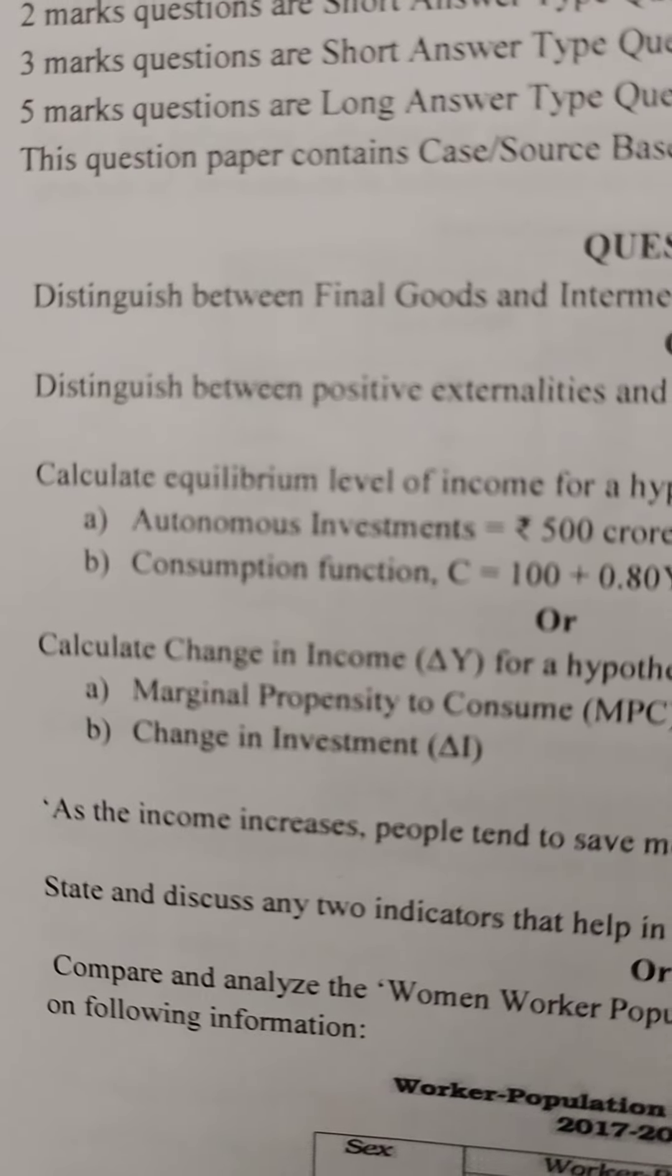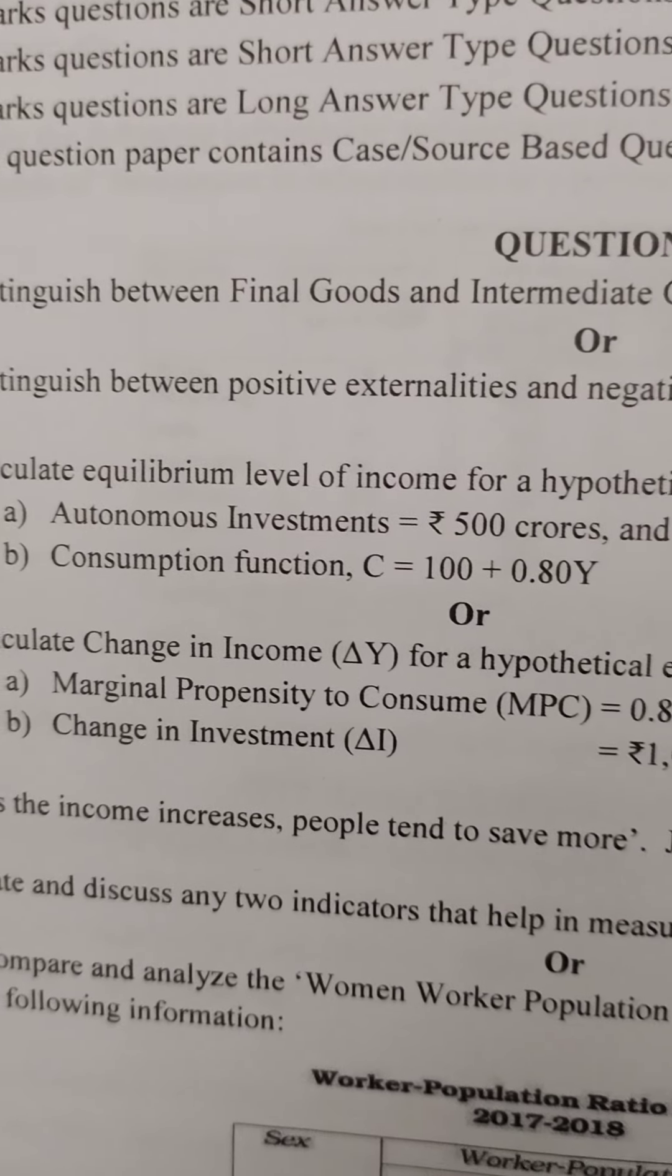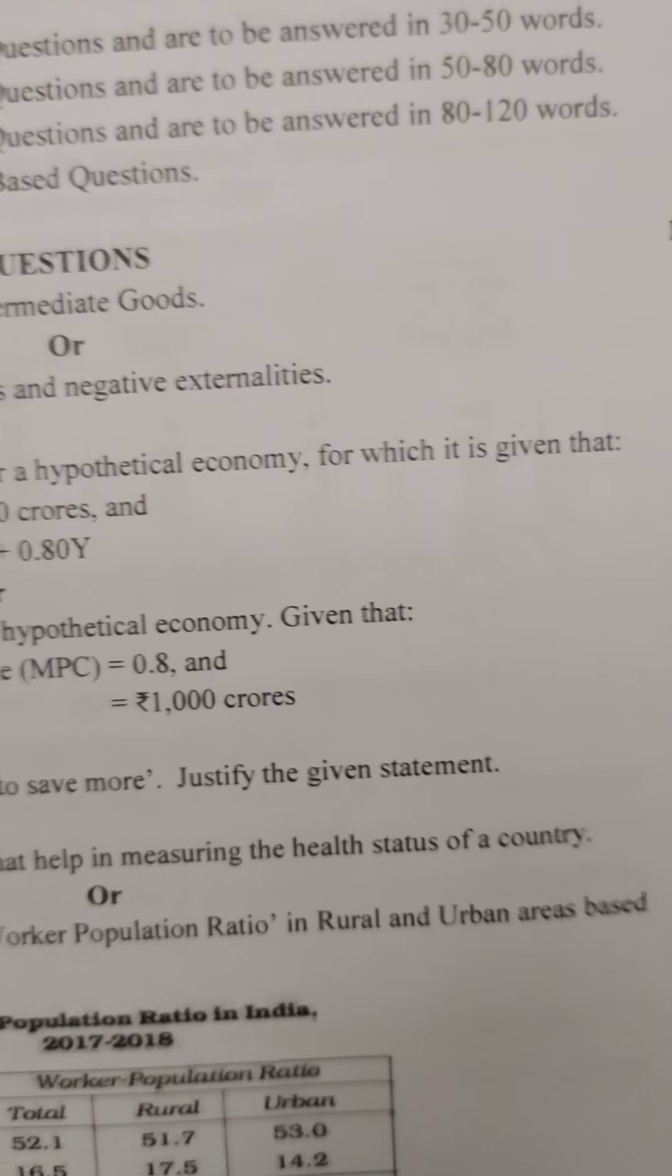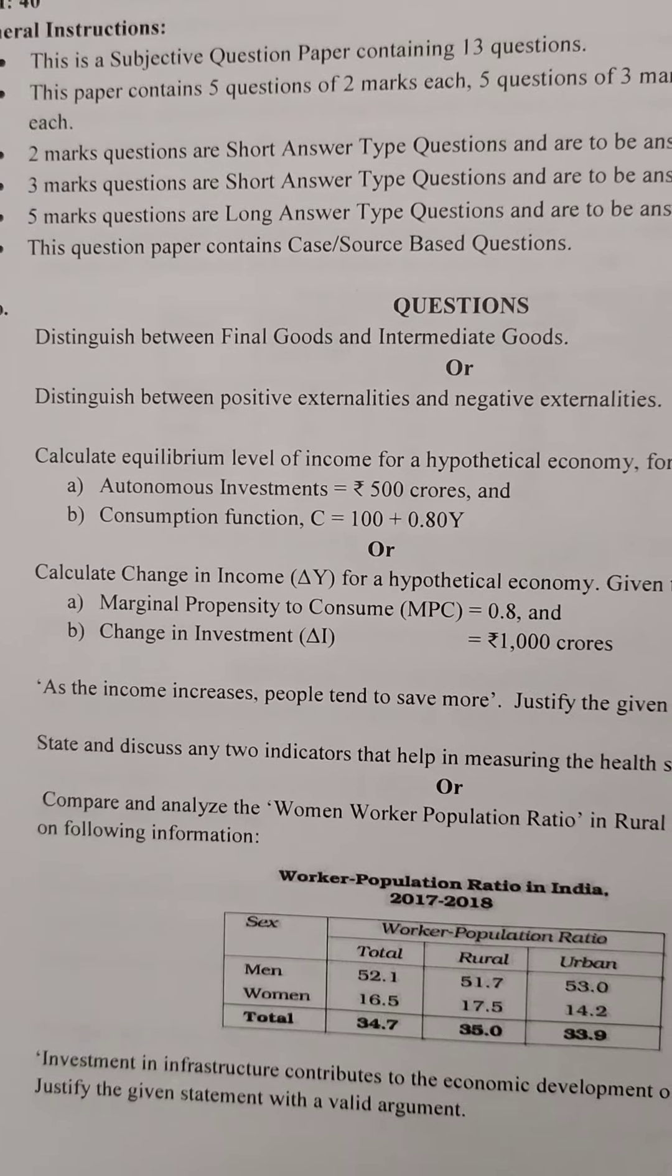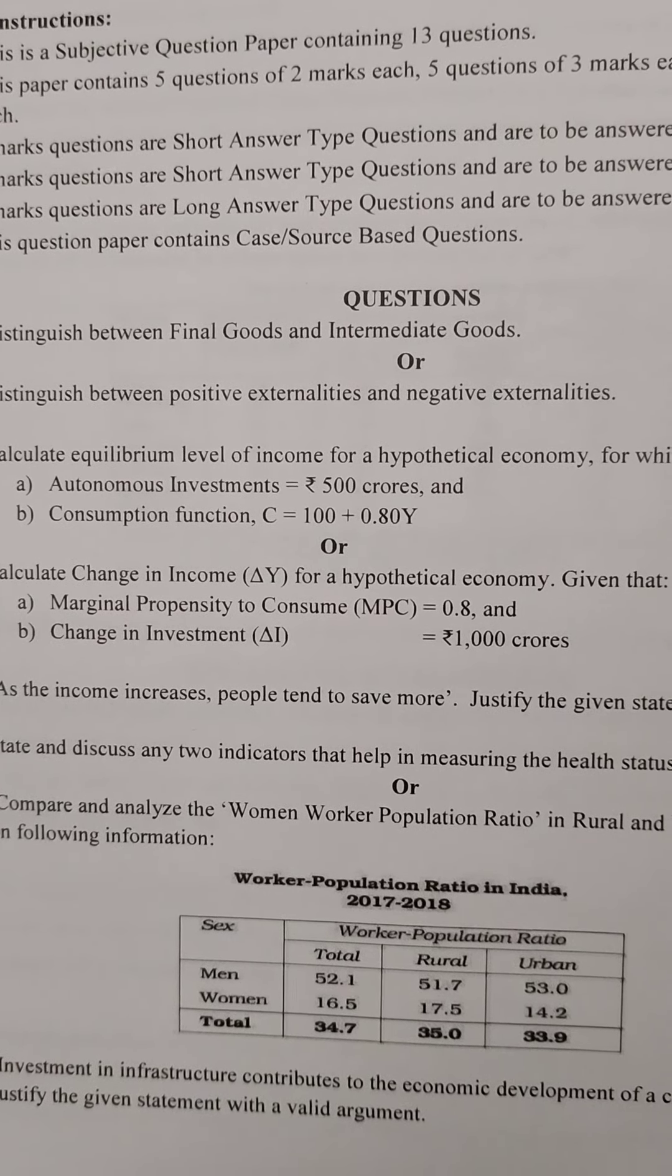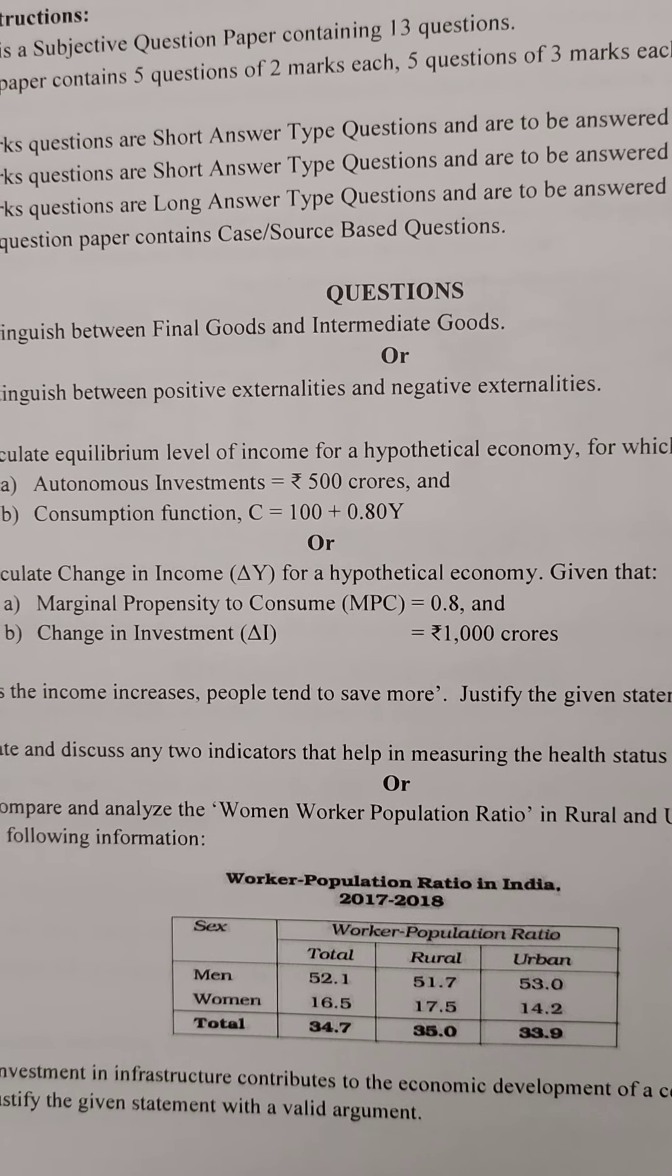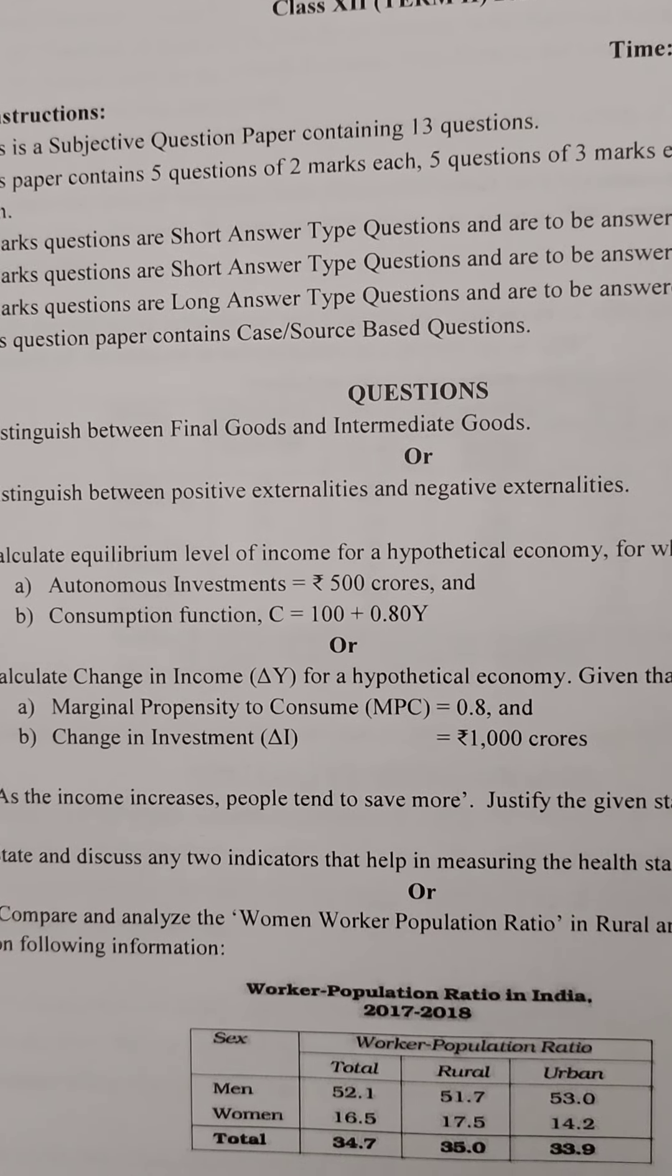Question 2, two marks. Calculate equilibrium level of income for a hypothetical economy for which it is given that autonomous investment is 500 crores and consumption function C = 100 + 0.8Y. Let's solve this.